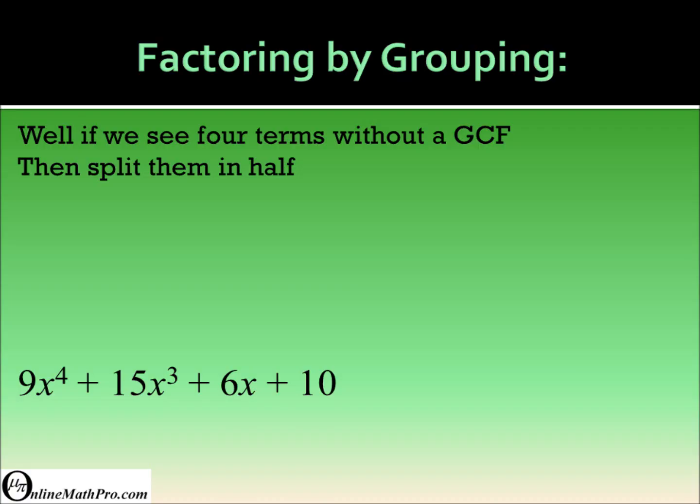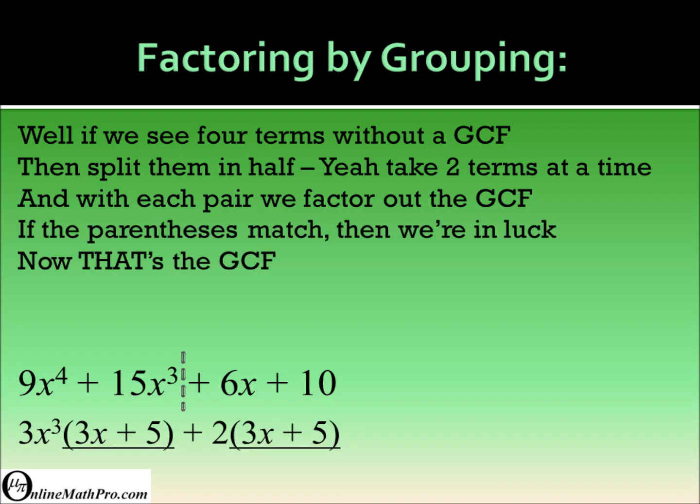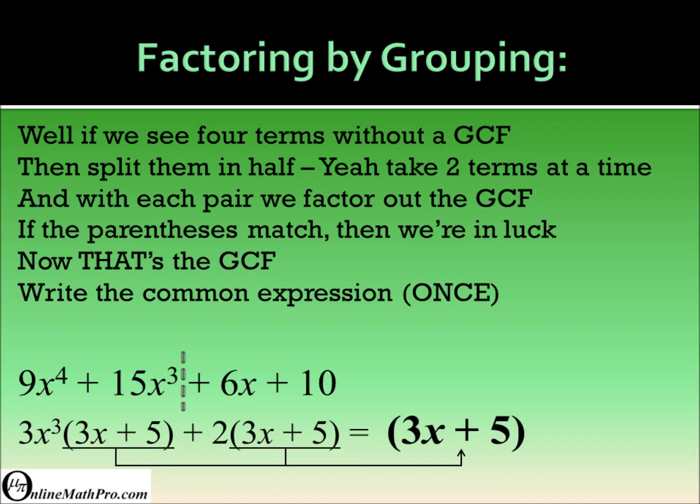If we see four terms without a GCF, then split them in half. Take two terms at a time, with each pair we factor out the GCF. If the parentheses match, then we're in luck - now that's the GCF. Write the common expression once and build the other factor with the terms that we have left.